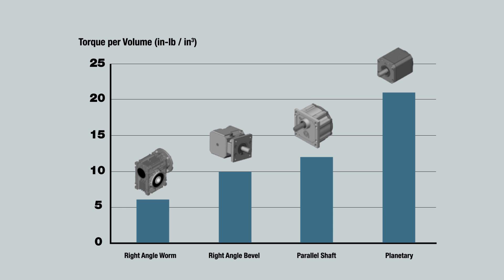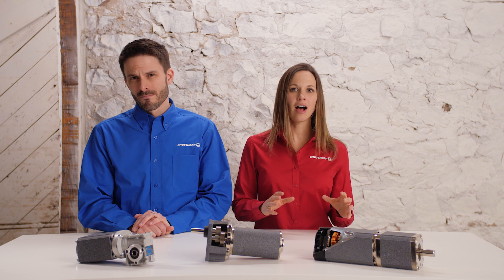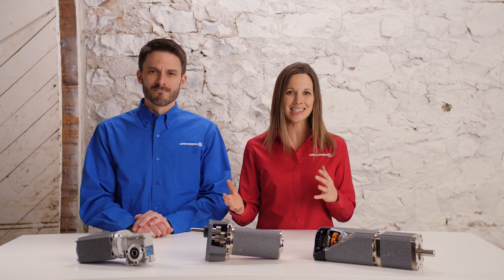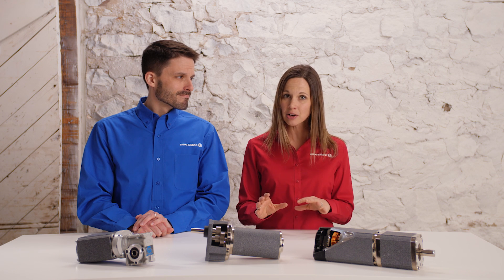The high torque density of the planetary gearbox means that for its small size it can be loaded to a relatively high torque. Be aware that in smaller reducers, higher output torques will generate higher temperatures since there is less reducer volume to serve as a heat sink to dissipate the heat that builds up. This is why the torque output of a planetary reducer can sometimes be limited by temperature.